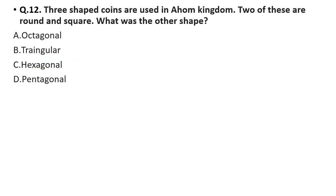Question 12: Three shapes of coins were used in the Ahom kingdom — two of these are round and square. What was the other shape? Option A: octagonal, option B: triangular, option C: hexagonal, option D: pentagonal. The correct answer is option A, octagonal.